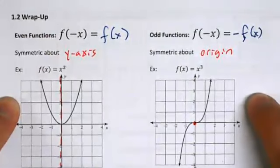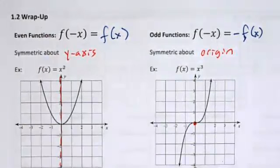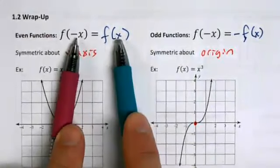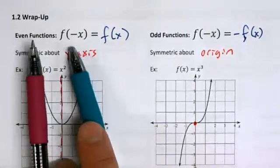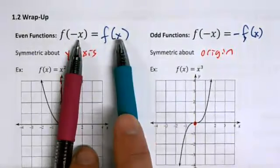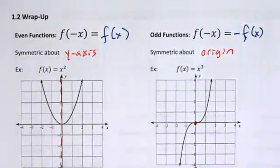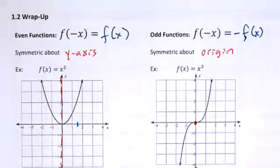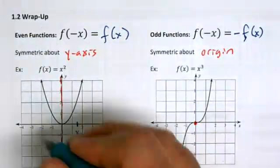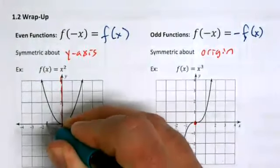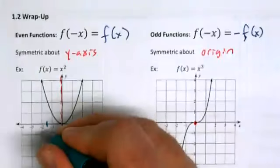If I take two x-values — one positive and one negative — and plug them into an even function, the y-values are going to be equal. Graphically, if I pick an x-value between one and two and another x-value at the same distance on the negative side — negative x — those outputs will match.